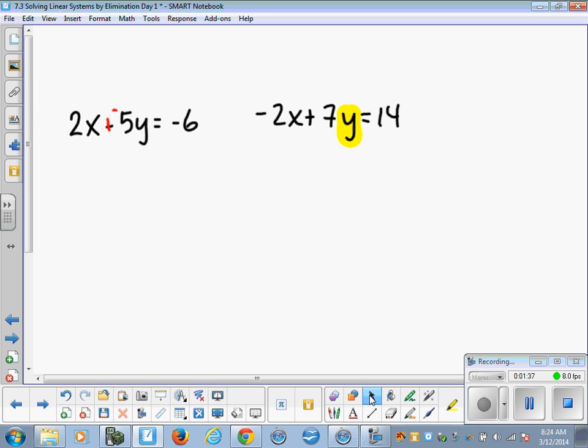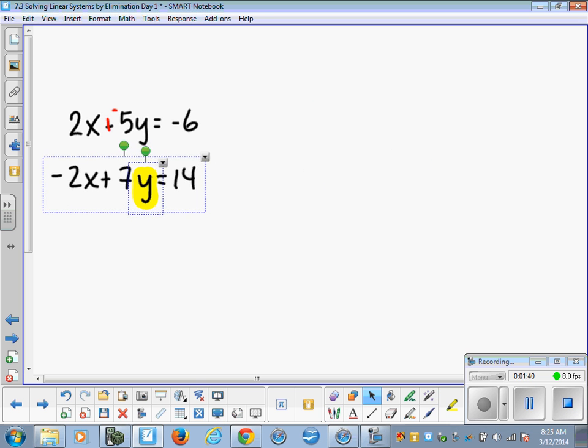This method is called elimination, and one of the first things you want to do with elimination is you want to make sure your equations are written one on top of the other, with the x's underneath the x's, the y's underneath the y's, and the constants on the right-hand side of the equation. This is called standard form. Okay, so after you line up the x's under the x's and the y's under the y's, what you want to do with this elimination is you basically want to add the two equations together.